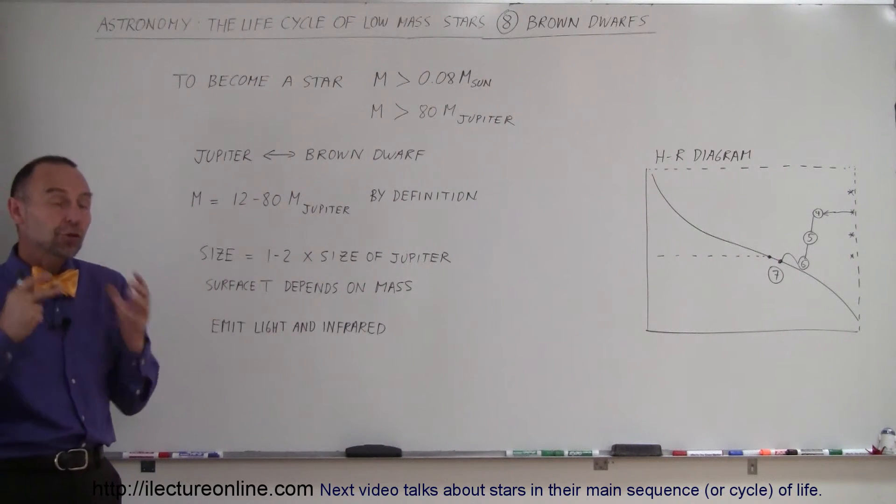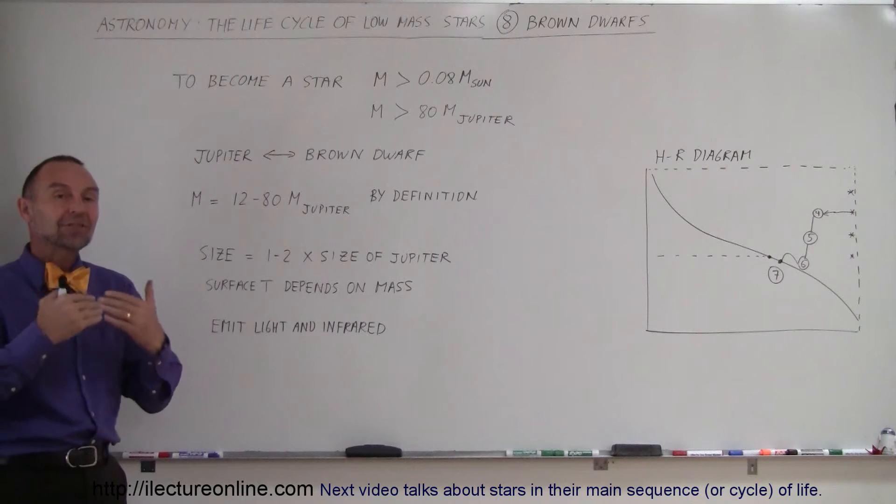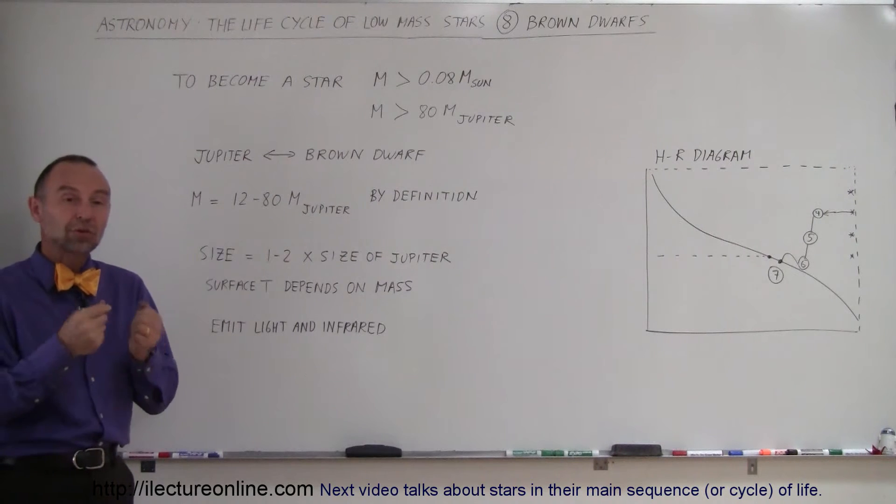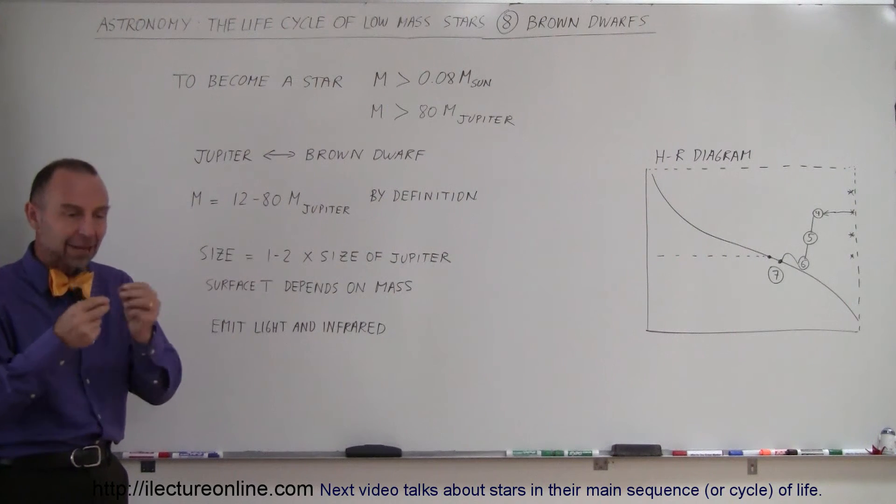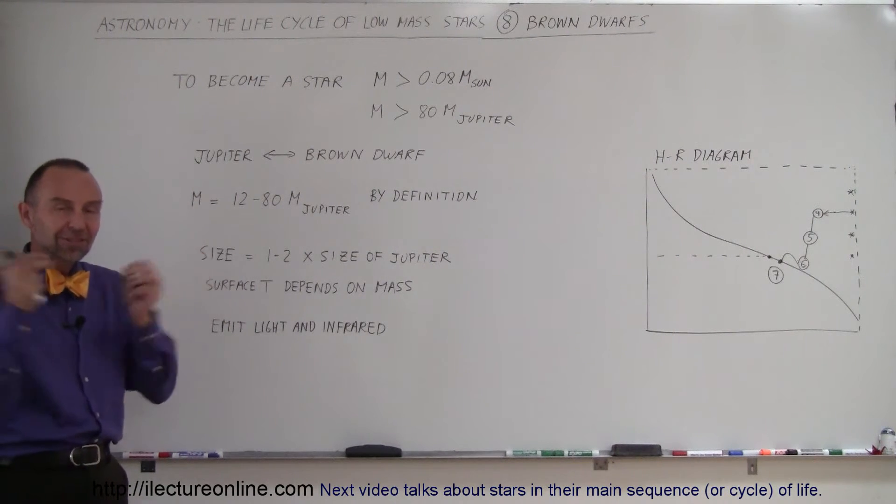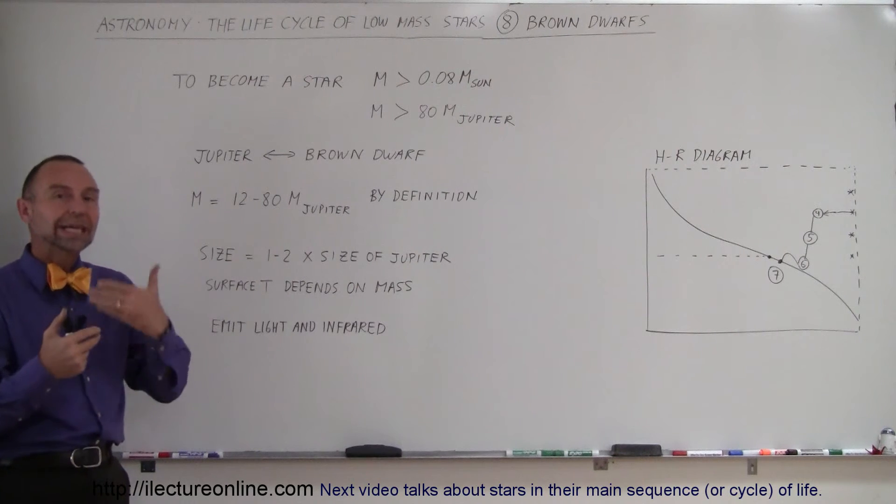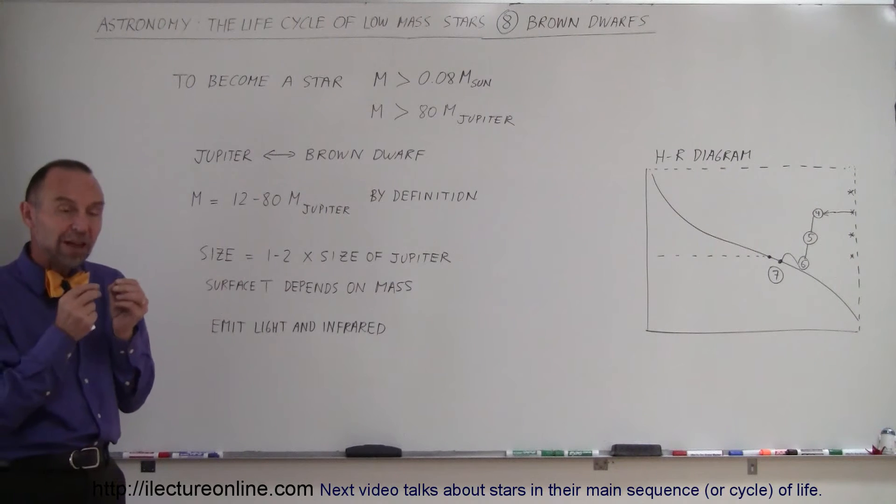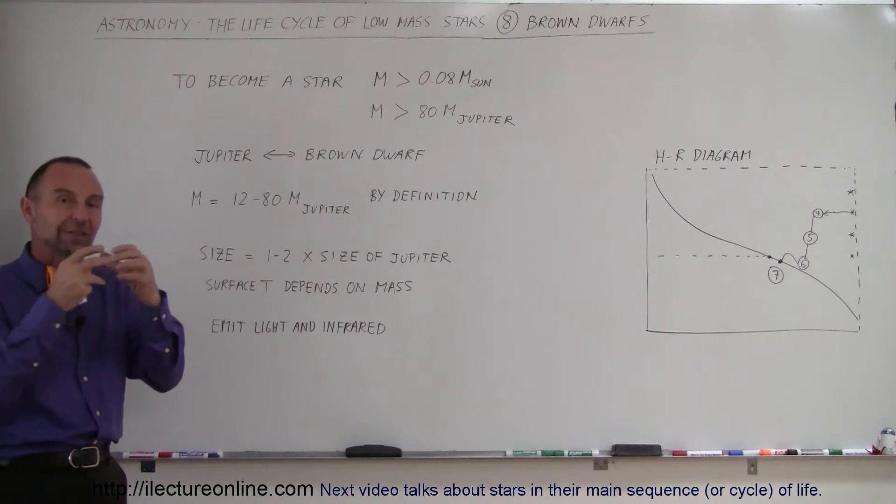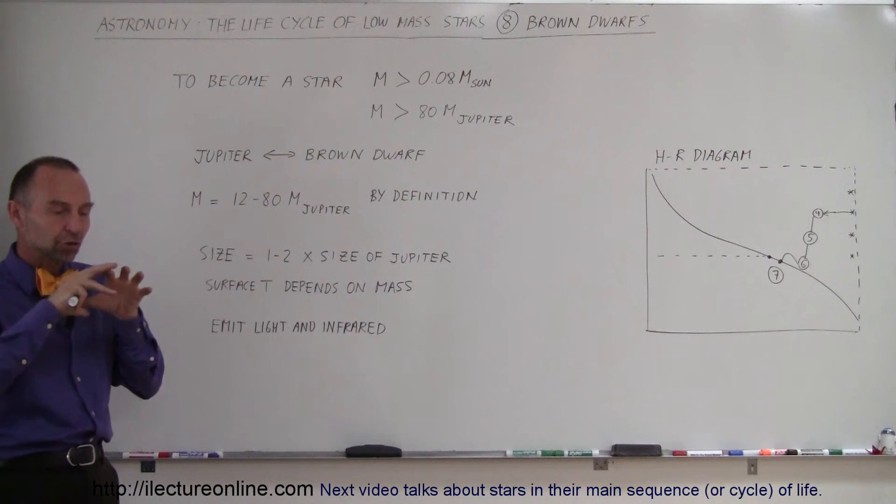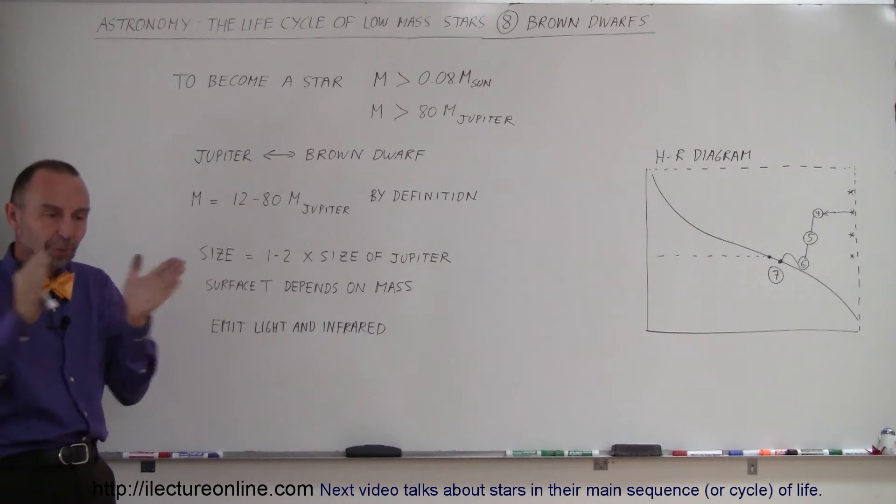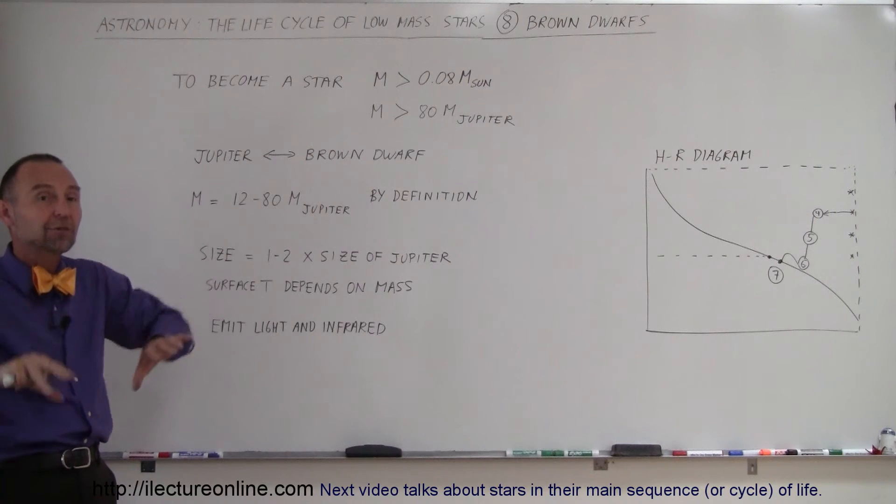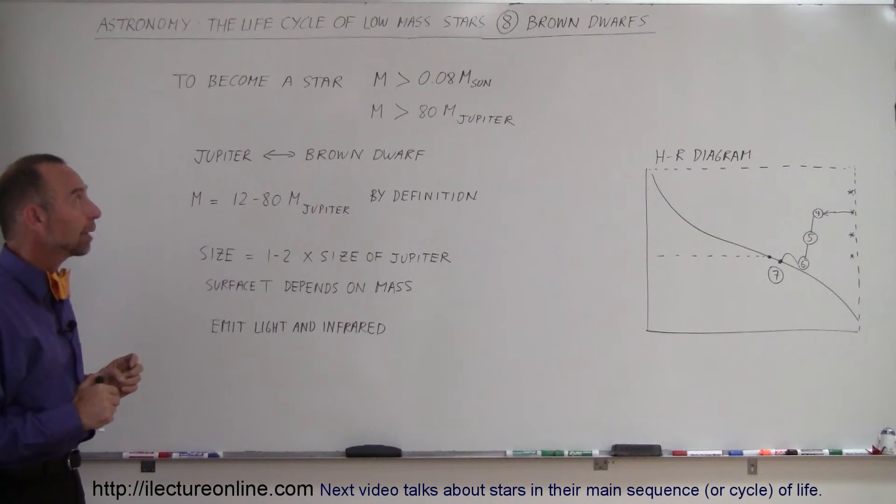For nuclear fusion to take place at the core, at least a temperature of 10 million degrees must be reached. This is required to make the molecules and atoms move fast enough to slam together and turn hydrogen into helium. Without 10 million degrees, they will not move fast enough, cannot bump into each other, and cannot fuse together because the nuclear strong force is not strong enough. The repulsive forces of the protons will keep them far enough apart so nuclear fusion cannot take place.